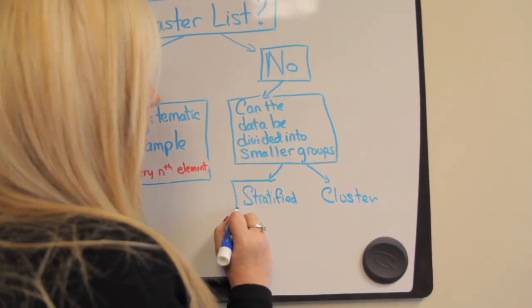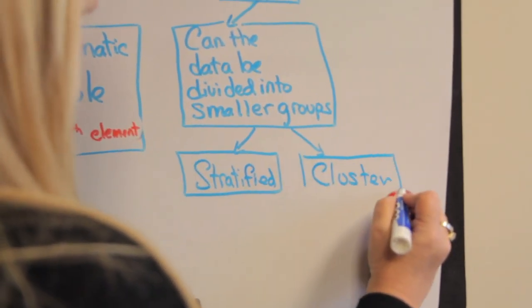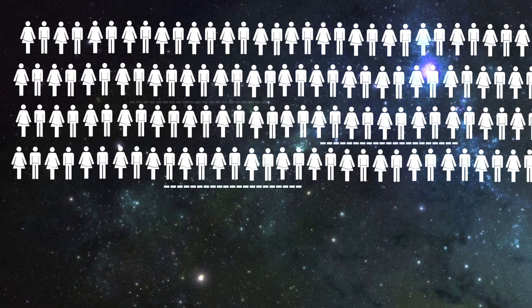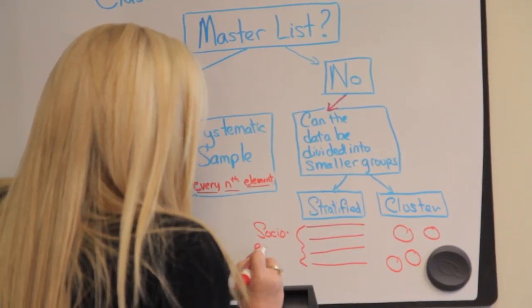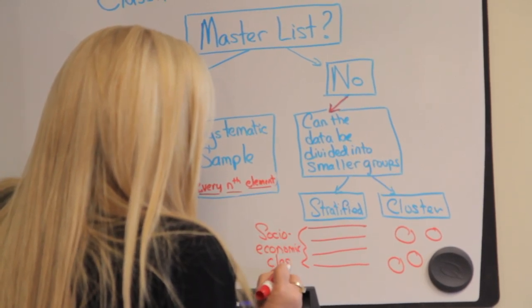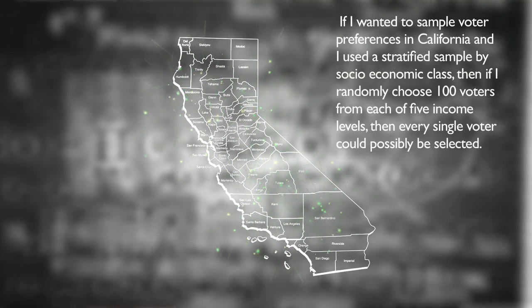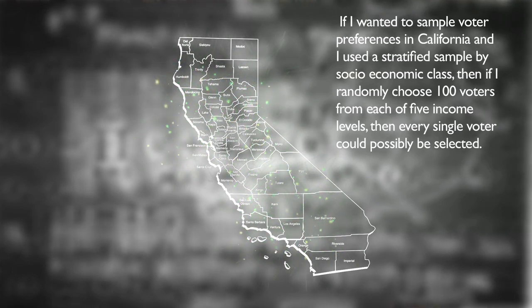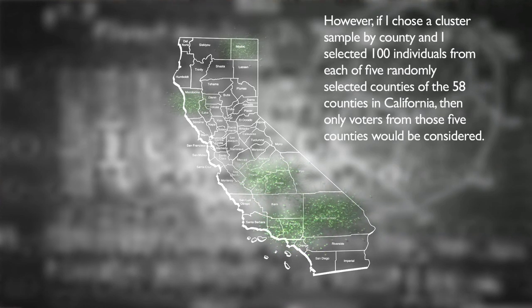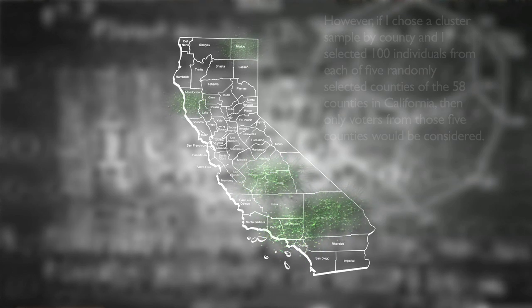If there is no master list, you might determine if there are clusters like counties, states, or business sites, or levels like socio-economic classes, then select random clusters or strata from the population. It is easy to confuse stratified sampling and cluster sampling. In a stratified sample, all members of the population may be chosen because random assignment comes from the entire strata, whereas in cluster sampling only members of the selected cluster may be chosen. For example, studying voter preferences in California using stratified sampling by socio-economic class means every voter could possibly be selected, while using cluster sampling by county means only voters from the selected counties would be considered.